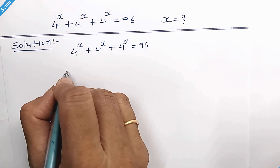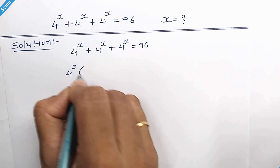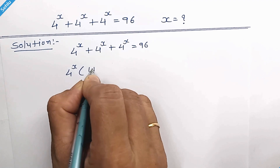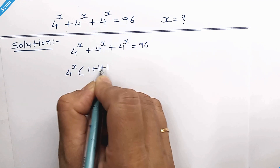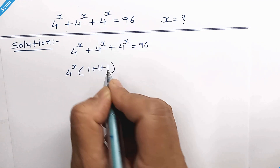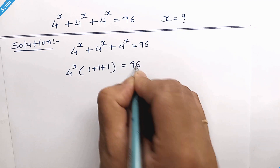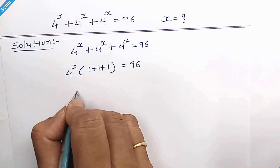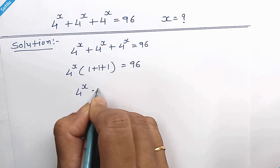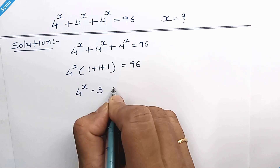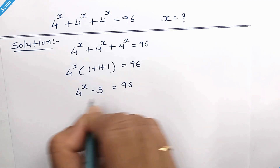What we are going to do is take 4 to the power x common, set equal to 96. So we have 4 to the power x times 3 is equal to 96.